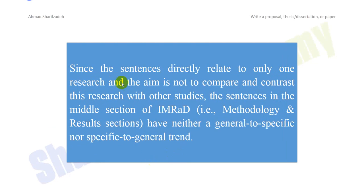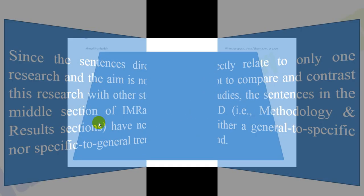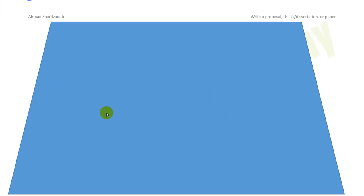In the methodology section and results section, you have the same width at the top and bottom. This means you don't narrow down your concepts in the methodology section — you write or report exactly what happened. You neither narrow the ideas to make them more specific nor generalize them. You simply report what happened. In the results section the story is the same.